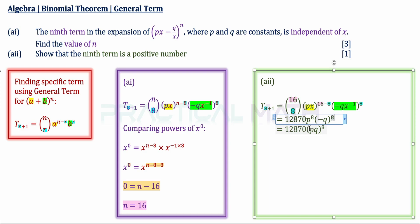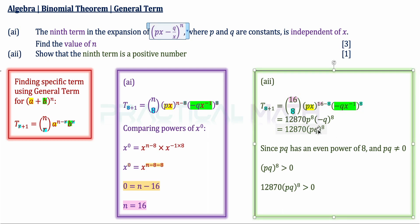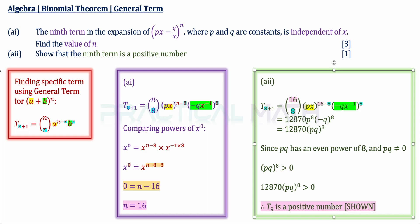Since (-q)^8 has an even power, it removes all negatives, giving q^8. So the term becomes 12870(pq)^8. Now, since pq has an even power of 8, it removes all negatives. And pq ≠ 0, because if pq = 0 there would be no binomial expansion. Therefore (pq)^8 > 0, and multiplying by 12870 means Term 9 > 0. Therefore Term 9 is a positive number — that's the answer for Part A2.